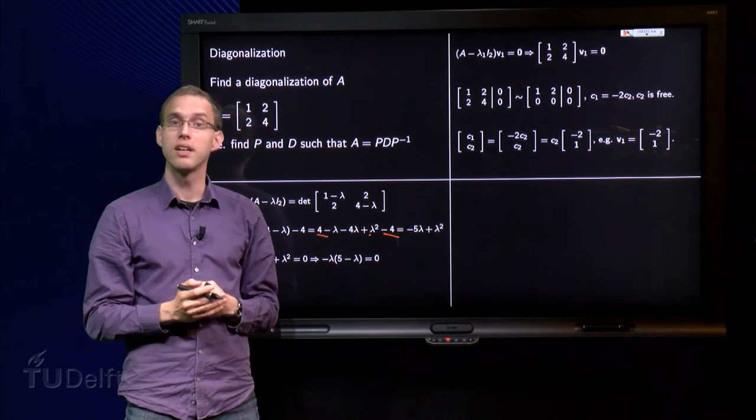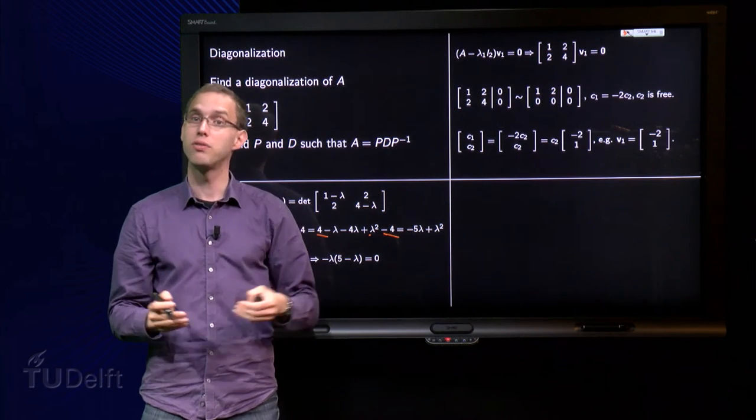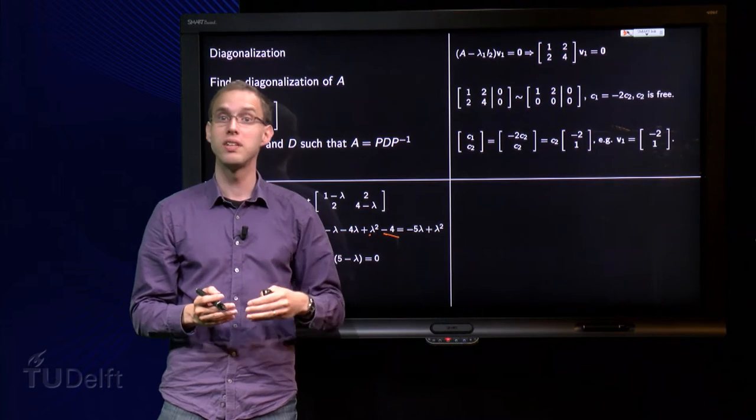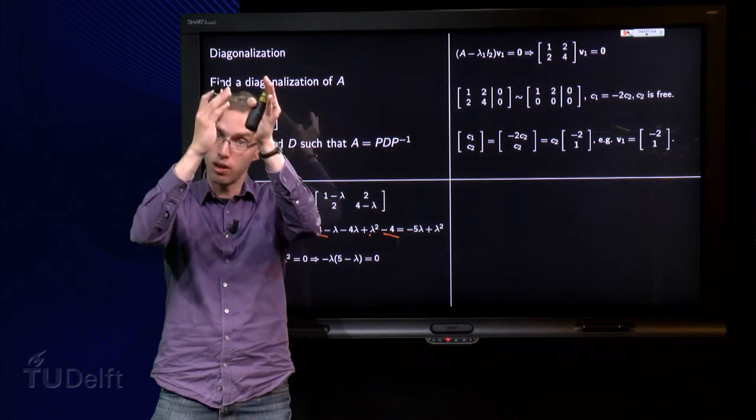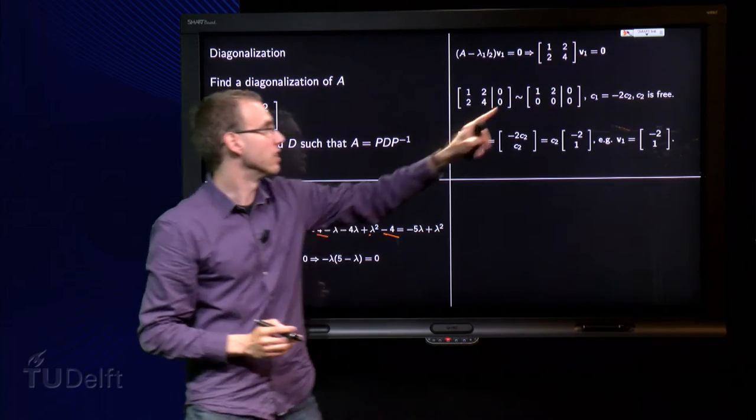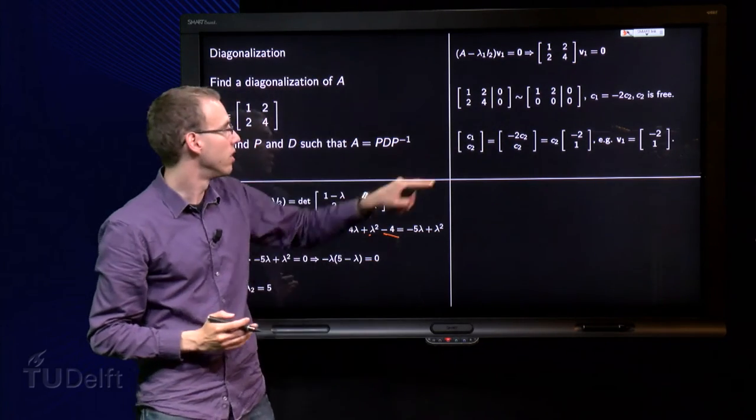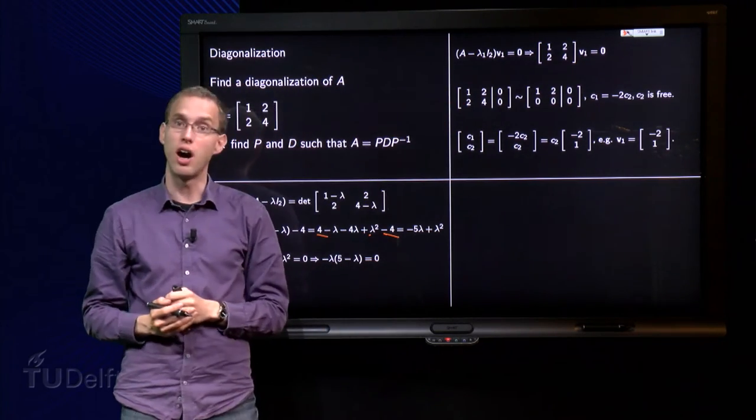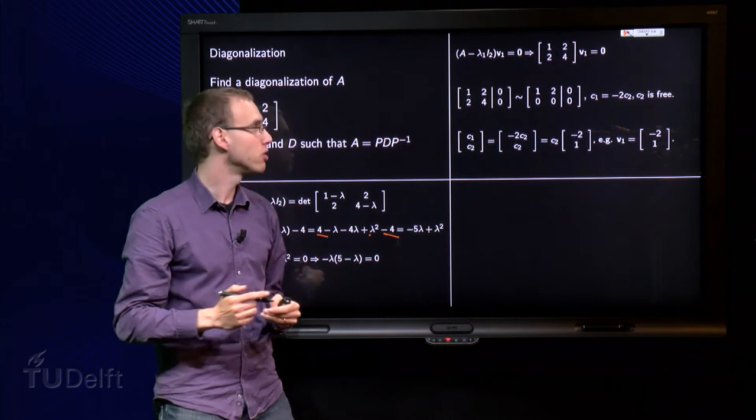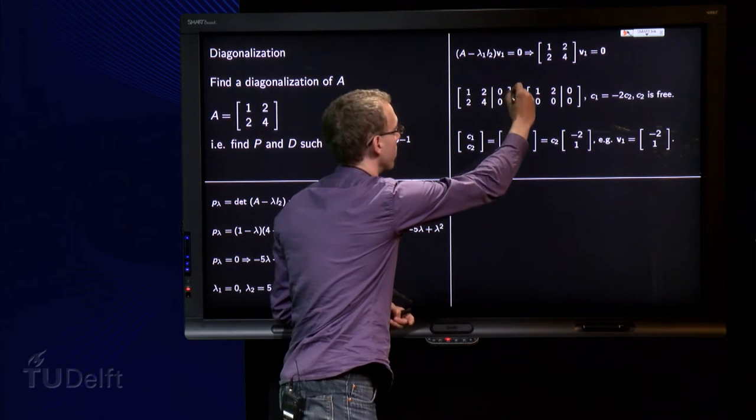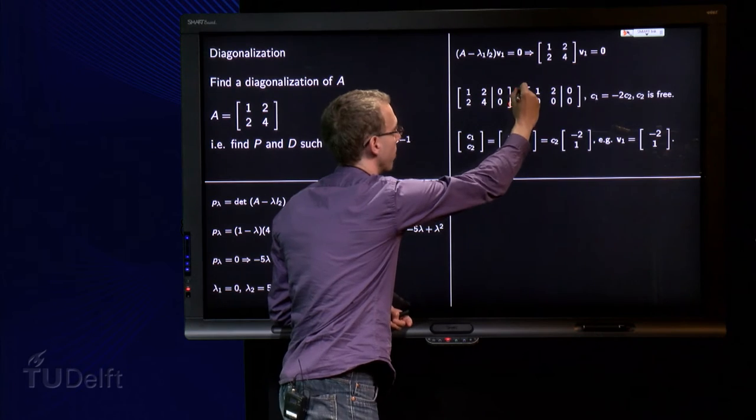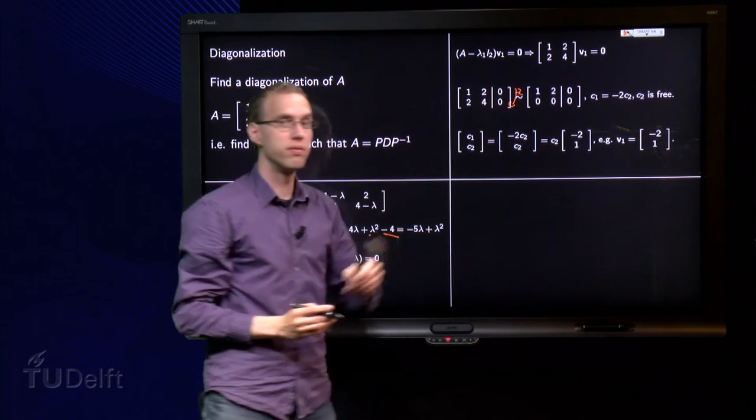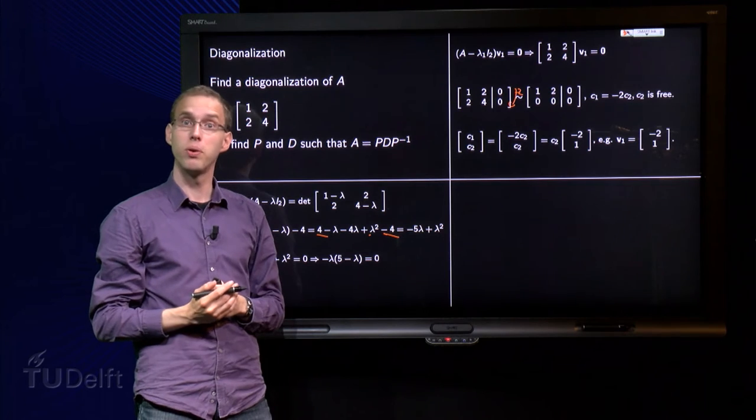Well, it's an equation of the form AV equals B, so we know how to solve it. Make the augmented matrix A, which is augmented with B, which is in this case the zero vector. So, here we have this augmented matrix, and you'll see that it's really easy to do the row reduction. Only one step, minus 2 over there.